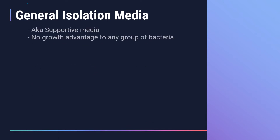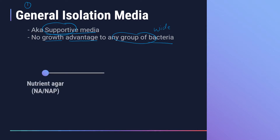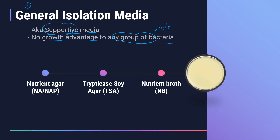The first type is the general isolation media, also known as supportive media, because it supports the growth of most non-fastidious bacteria. It gives no advantage to any specific group of bacteria, providing all essential nutrients for a wide range of bacteria, yeasts, and molds. Examples include nutrient agar plate (NAP), trypticase soy agar (TSA), and nutrient broth. NAP and TSA are solid media, while nutrient broth is a liquid medium.